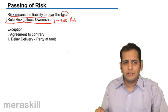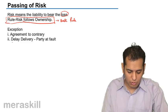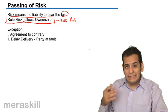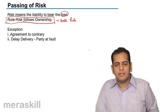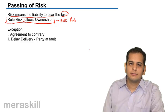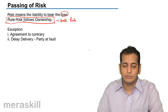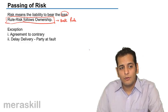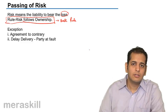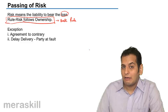So a contrary intention may be expressed in the contract, or there is a delayed delivery. For example, you come to my place and purchase the pen. I tell you that I'll deliver it to your house tomorrow, but because of a shortage of stock, I deliver it after 10 days.